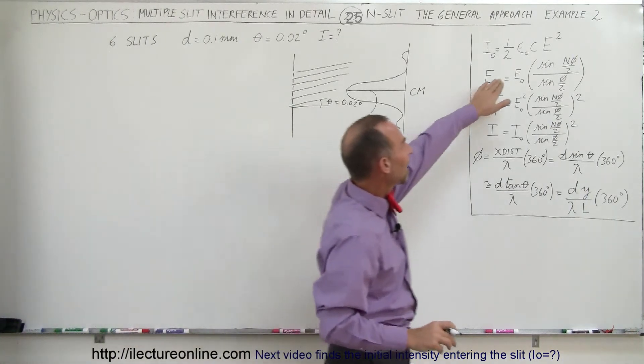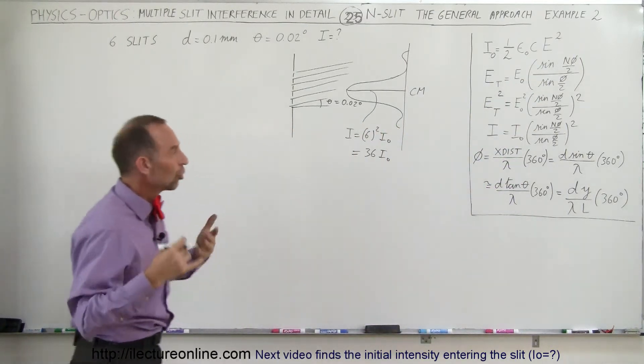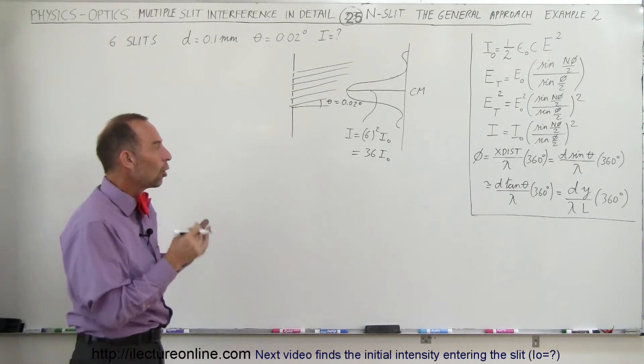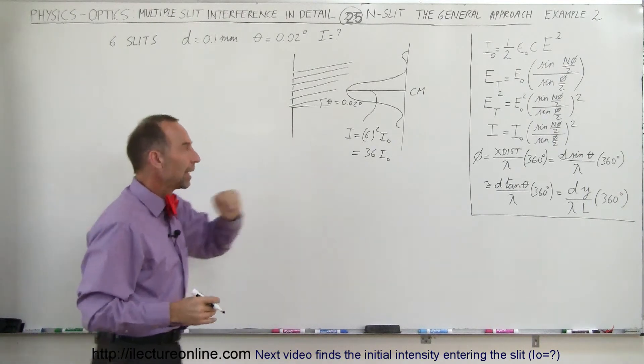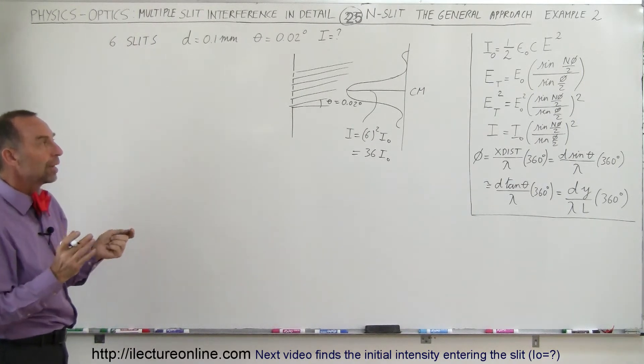Well, we have it over here, but we haven't actually calculated it yet. In the next video, we'll show you how to calculate what I₀ is equal to. Right now, we're just going to find the intensity all in terms of I₀. We'll show you later how to find I₀. So, how are we going to do that?